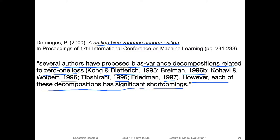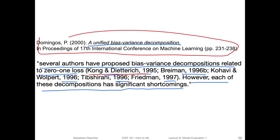In the next couple of slides, I will mostly refer to what Pedro Domingos said, and what Dietterich and Kong wrote in 1995. I will provide you with a reference to these papers so you can dig into more detail if you are interested. But it's not necessary to know the details from these papers for this class. I only want to go over the brief intuition, which is mostly based on Dietterich and Kong's work in 1995, and then also Pedro Domingos' explanation of this work.